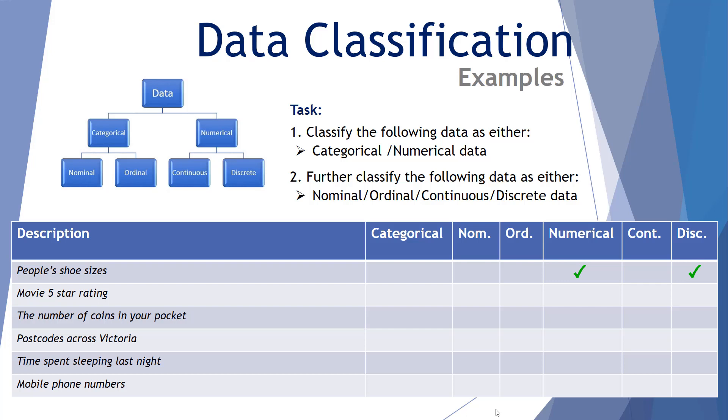Example two, the movie five star rating. You've got one star, two star, three, four, five. It does involve numbers. However, it's a rating system where the numbers represent a label. So this is categorical. And indeed, it is ordinal because the ranking goes from poor up to excellent. The number of coins in your pocket. We can count them. That's numerical. And because we can count it, it is discrete.